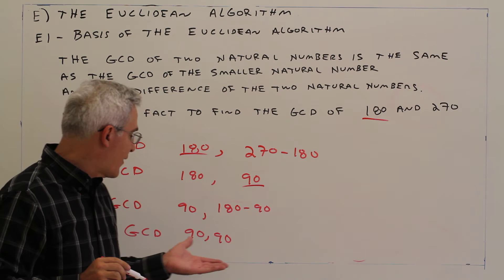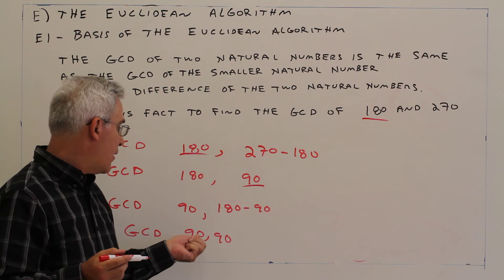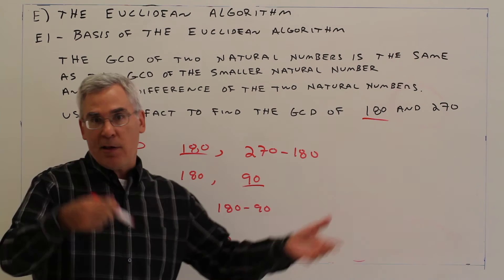Well, the greatest common divisor of 90 and 90 is 90. This has a factor of 90, this has a factor of 90. Got one each.